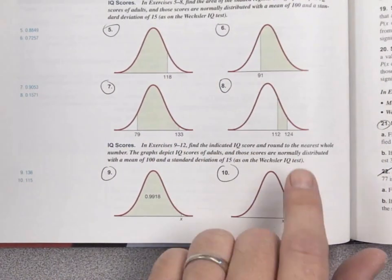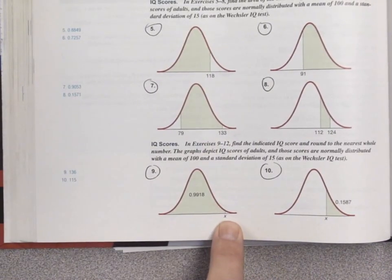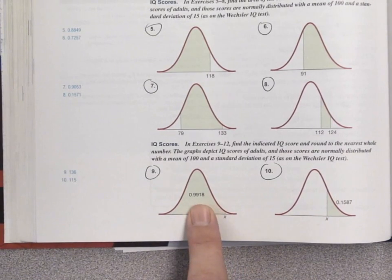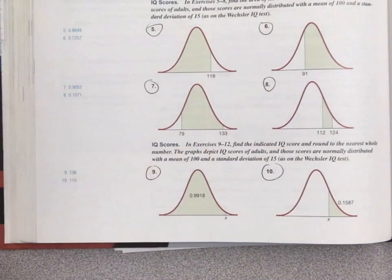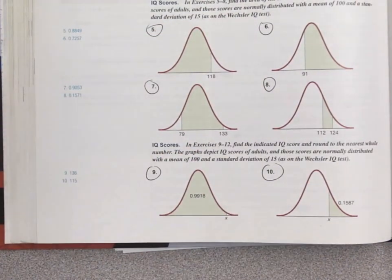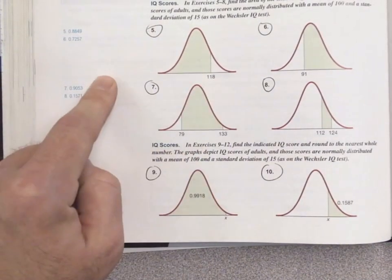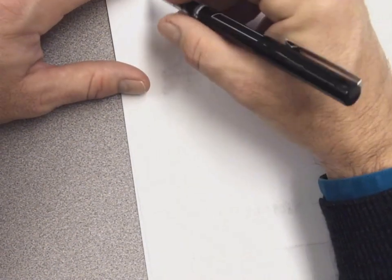For number 9, we want to find a specific area. Before doing that, let's do something similar to number 5 first, because it goes one way — from x value to area — and number 9 goes the other way, from area to x value. It's easier to go from x value to area first, so let's do that.